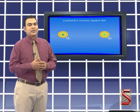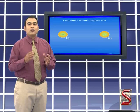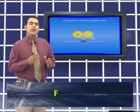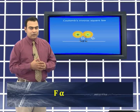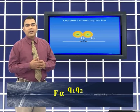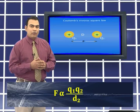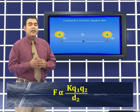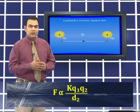According to Coulomb's inverse square law, the force of attraction or repulsion F between any two point charges q1 and q2 is directly proportional to the product of the charges and inversely proportional to the square of the distance d between them, where k is the proportionality constant.